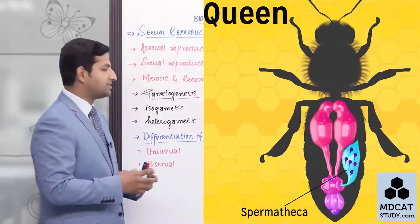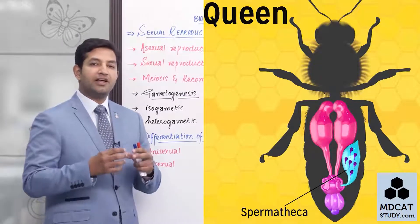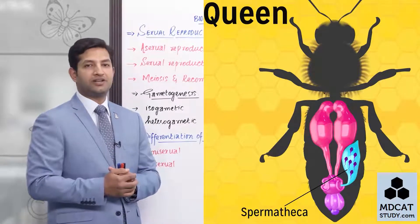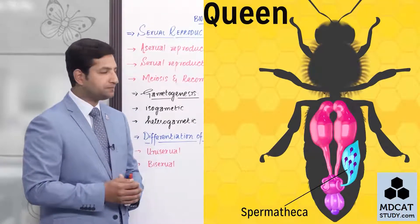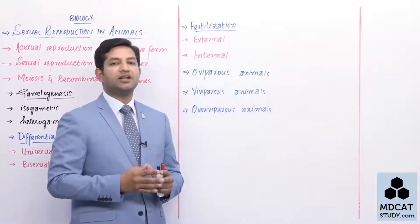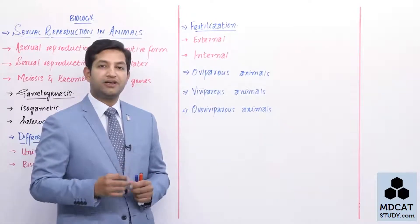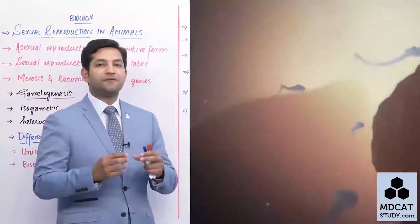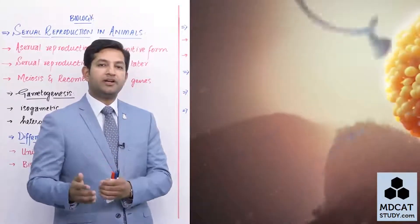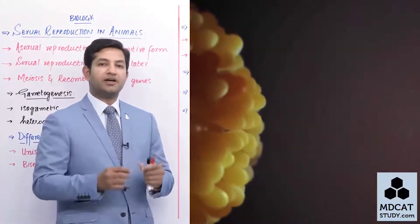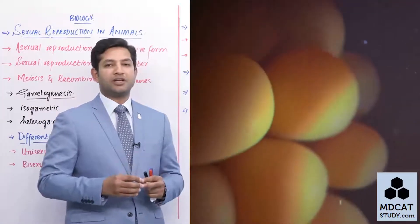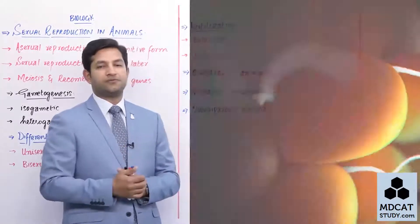Next, we are going to include fertilization, which is one of the most significant evolutionary processes in sexual reproduction. As soon as we hear the name fertilization, we should immediately understand that it involves the fusion of gametes. Whether gametes are produced from the same parental body or different parental bodies, until and unless they fuse with one another, that process of fusion is known as fertilization.